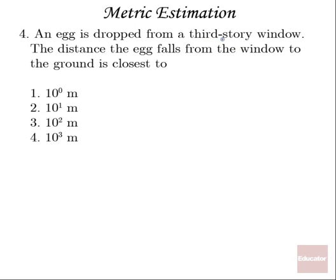Number four, we're going to drop an egg from a third story window. The distance the egg falls from the window to the ground is closest to, well, if we assume that each story is about 3 meters, or 3 yards in the English system, they're pretty close to each other. That's going to be 9 meters, 10 meters for 3 stories. So, 10 to the 1st meters, pretty close.